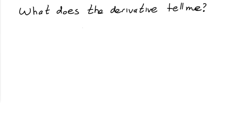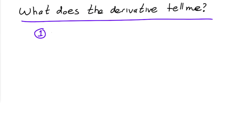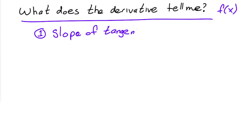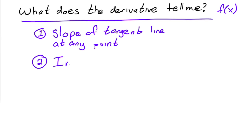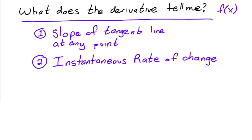In trying to figure out what the derivative tells us — we already know that if you find the derivative of a function f of x, that derivative is going to tell you the slope of the tangent line at any point. We also know that it gives us the instantaneous rate of change, not the average.